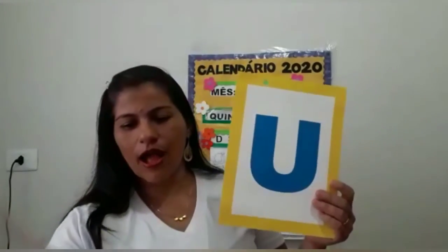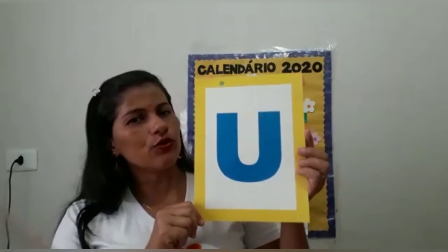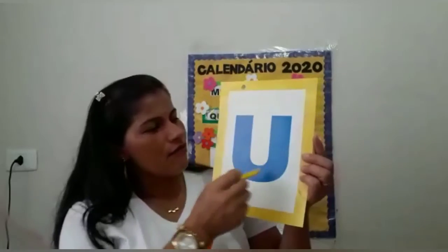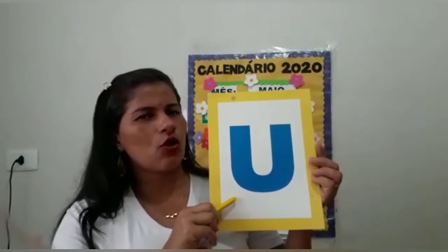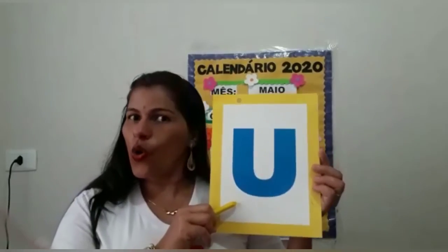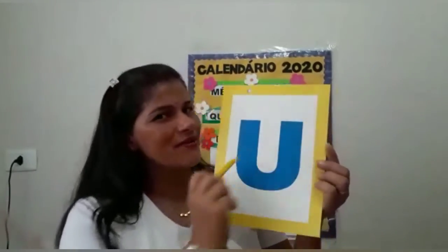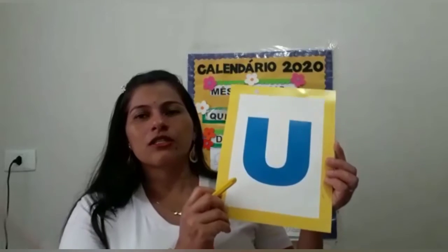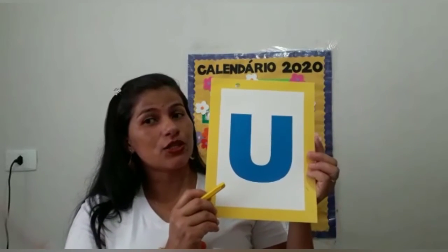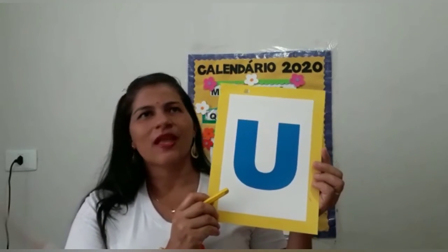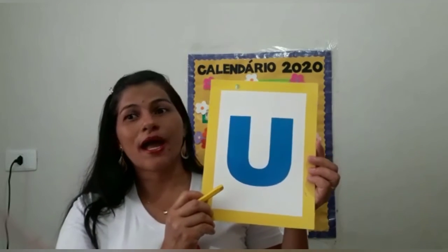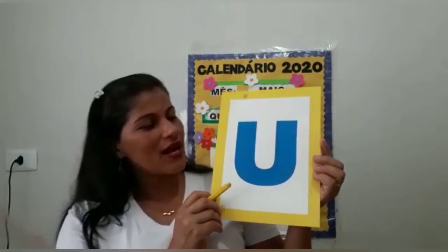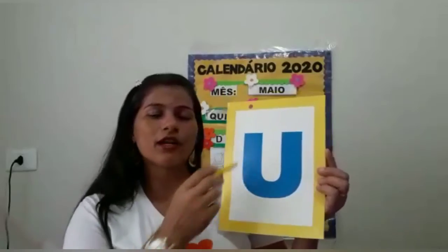Muitas palavras nós escrevemos com a vogal O. E a última vogal do nosso alfabeto é a vogal U. A vogal U também tem palavrinhas que iniciam com ela: uva, urso, urubu, unha. Muitas palavrinhas! E com essa letrinha também podemos formar nomes de pessoas — Ubiratã, Humberto. Humberto se escreve com a vogal U também, e tem Humberto com a letrinha H. Então, as vogais também compõem muitas palavras, assim como as outras letras do alfabeto.